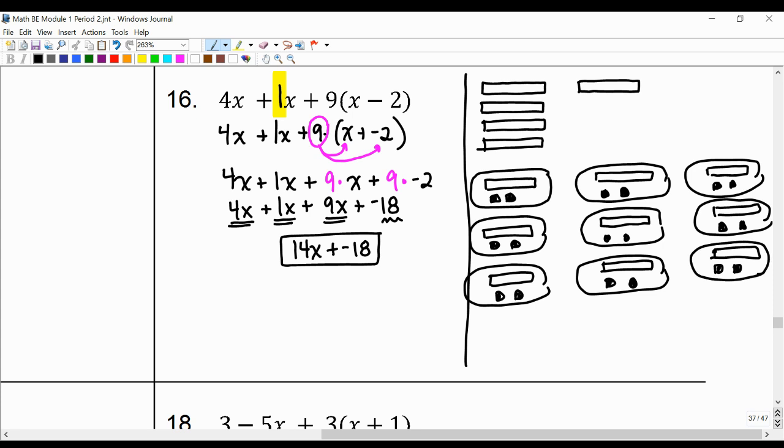So if I drew this correct, I should have negative 18 unit tiles. 2, 4, 6, 8, 10, 12, 14, 16, 18.